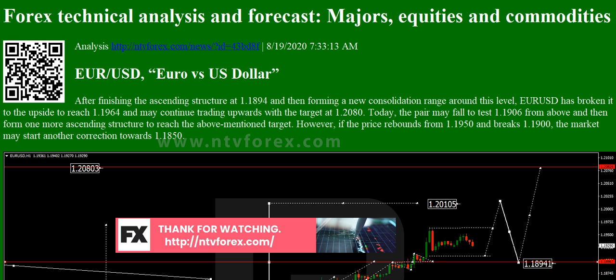USDCHF: After breaking 0.9070 to the downside, USDCHF has reached 0.9020. Possibly, today the pair may return to 0.9070 and test it from below. After that, the instrument may resume moving downwards with the target at 0.9000.